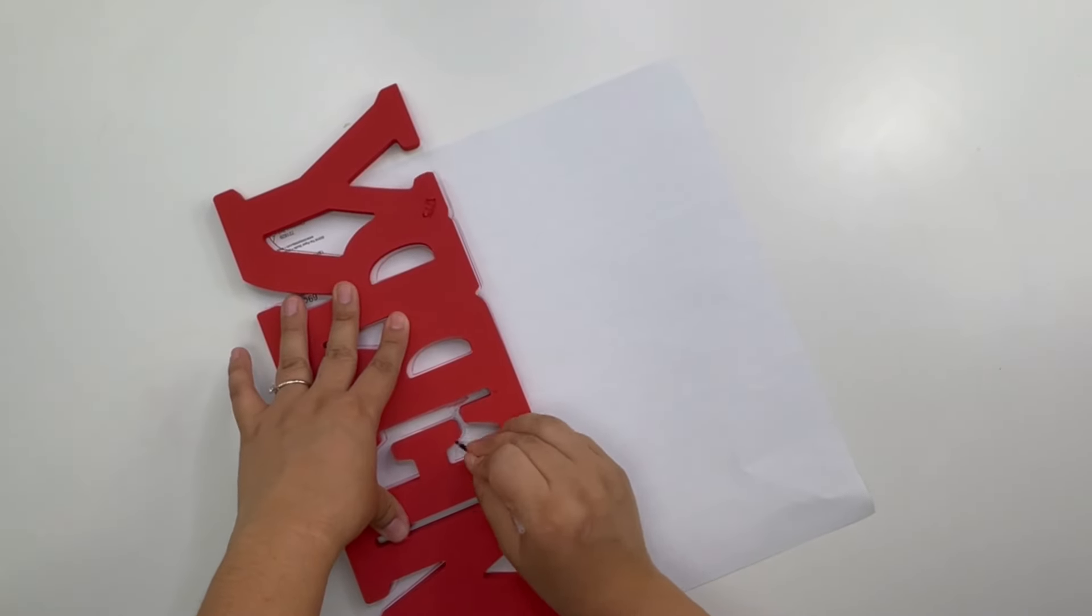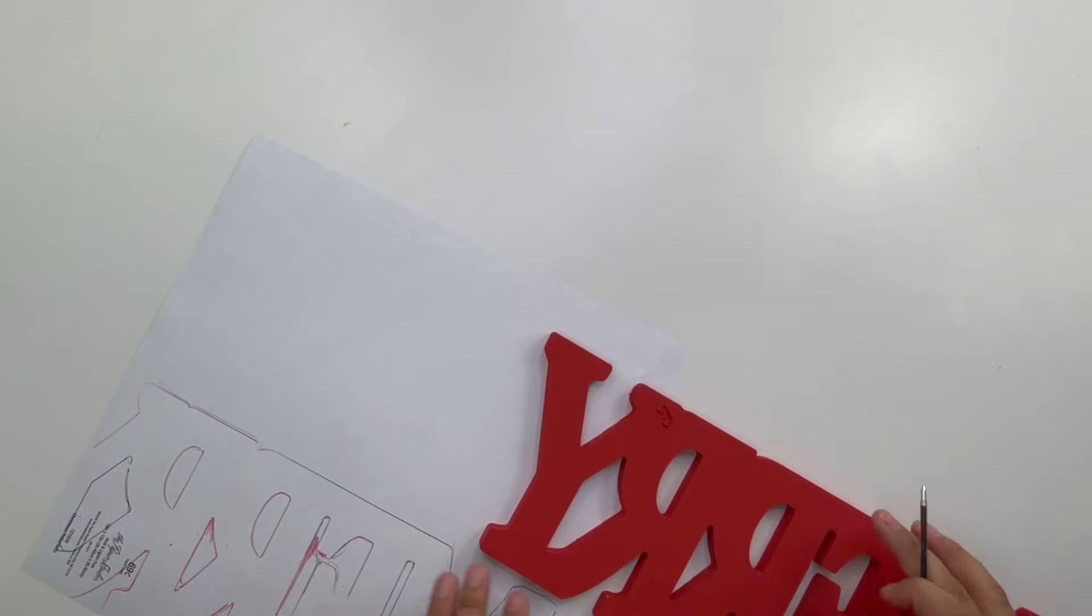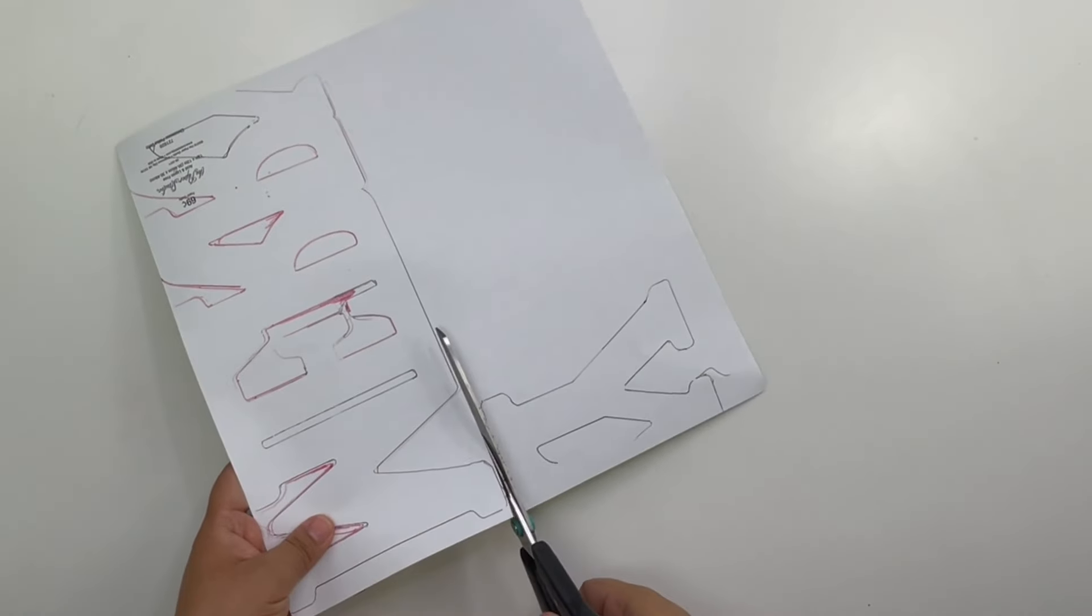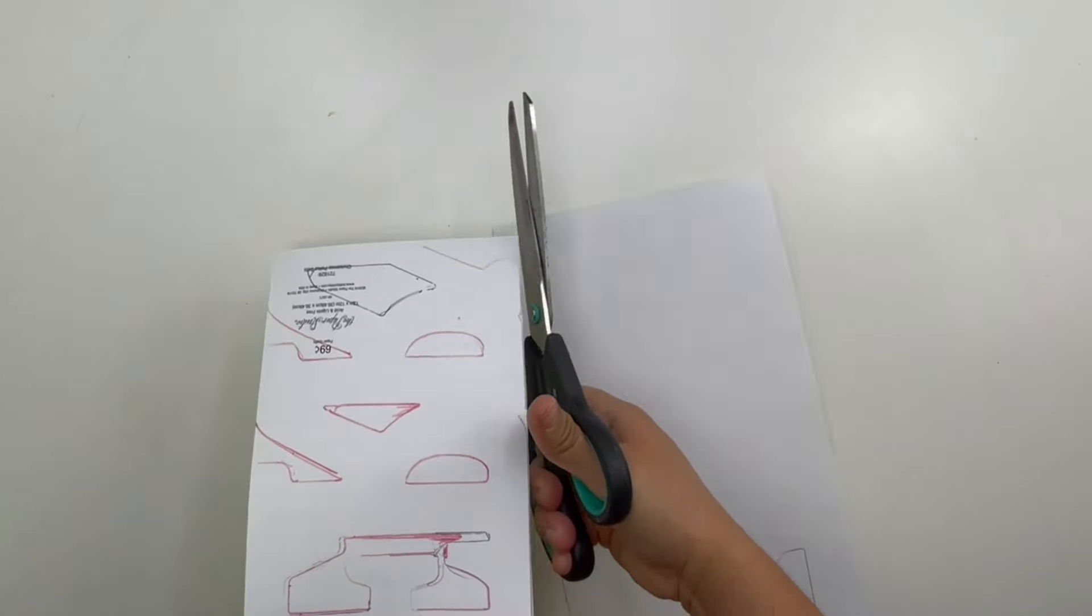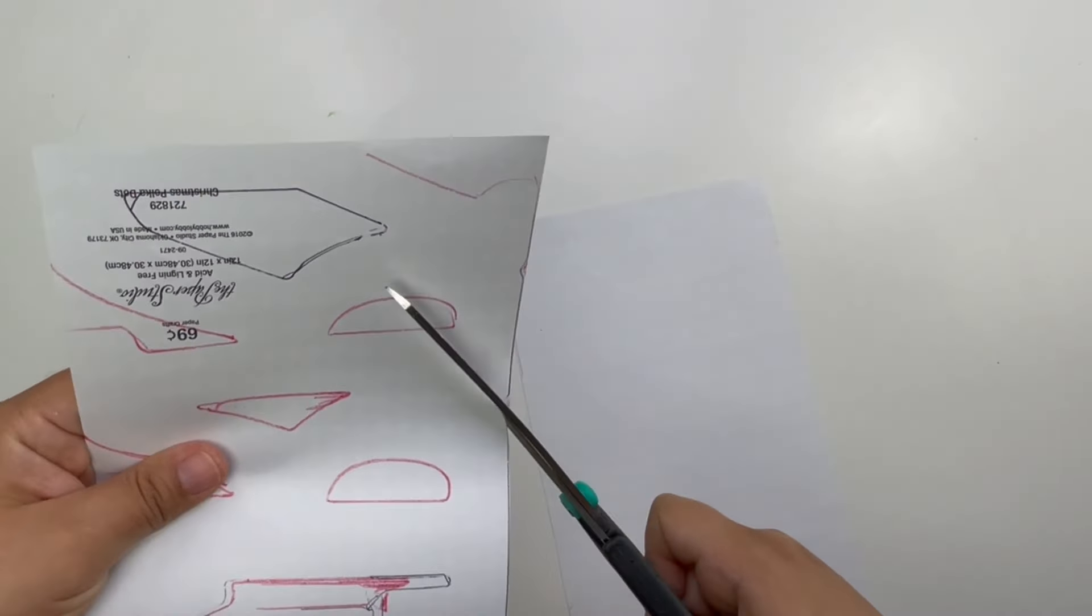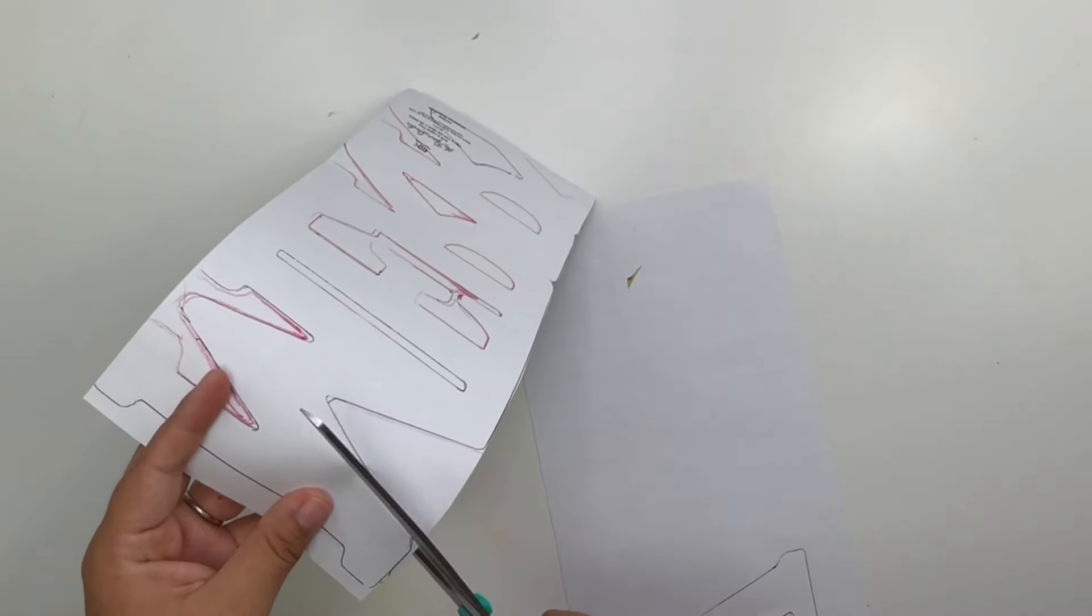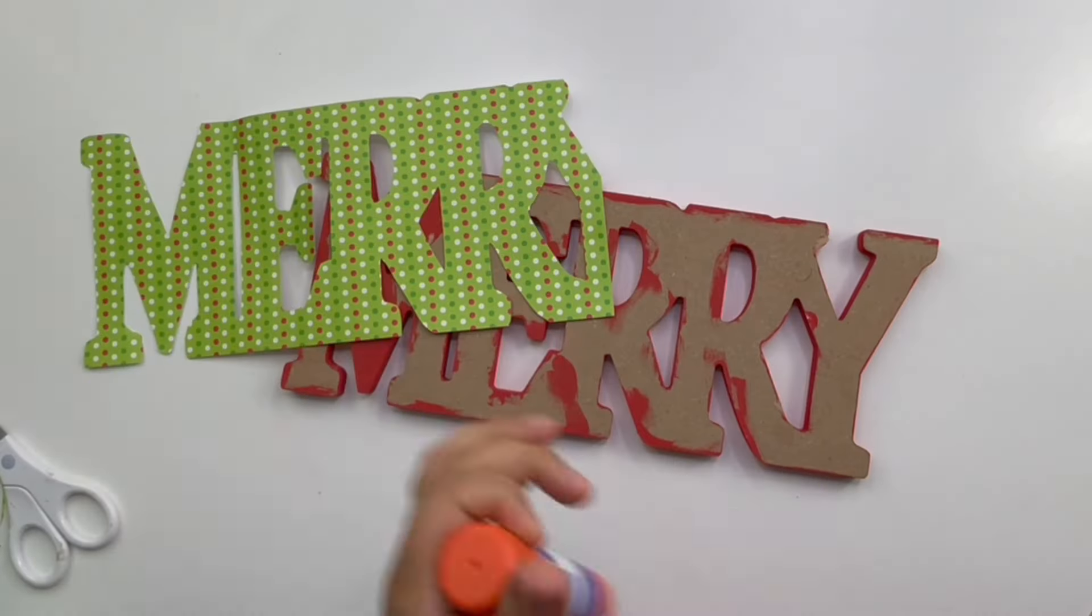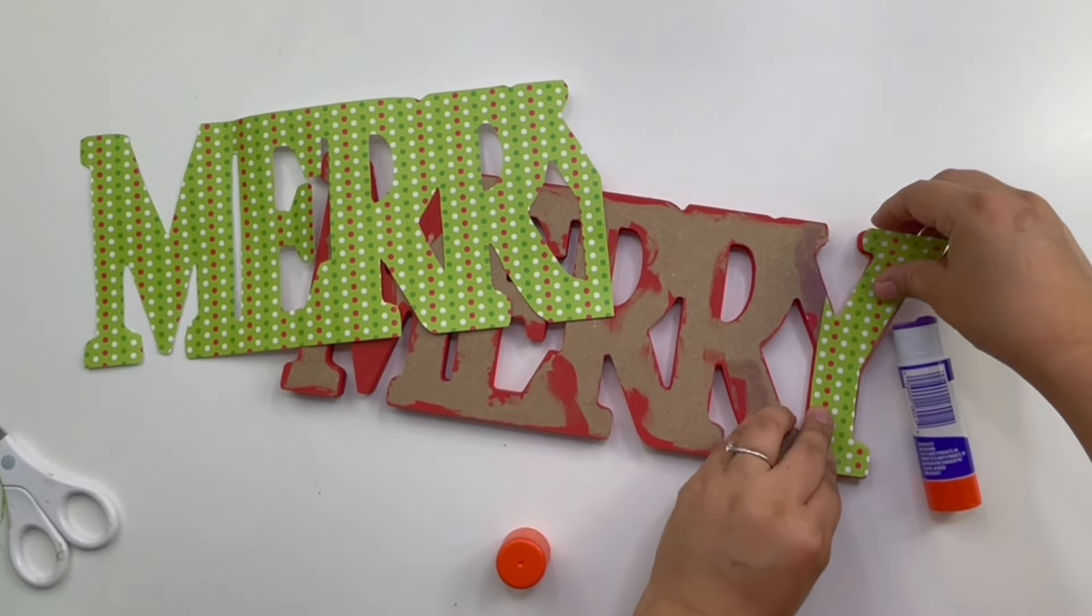I also want to point out that this sign was too big so I had to do the Y separately. I started off by gluing the Y first and then the rest. Honestly you can't really tell unless you stare at it.